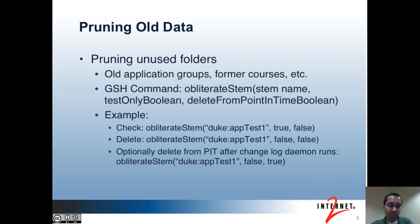This includes groups, other folders, and so forth. This is different from the del-stem-gsh command in that that command will only delete a stem if it's empty. The obliterate-stem-gsh command has a few parameters. The first is the stem name that you want to delete. The second is whether you're just doing a test and want to print out what would be deleted. And the third is whether you want to also delete point-in-time data for objects within the specified stem.